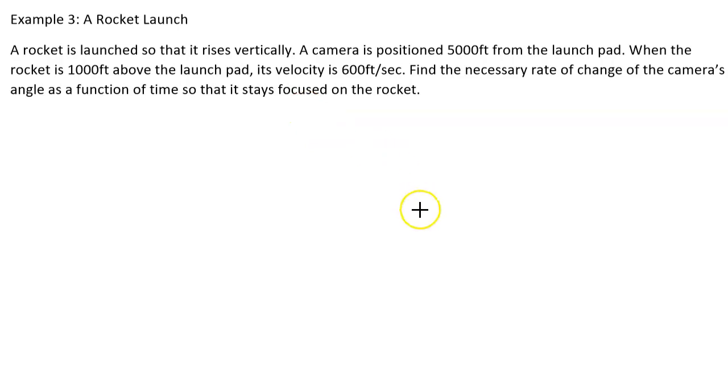We always want to begin our problem with trying to visualize it. So we've got a camera and its horizontal distance from the launch pad is 5,000 feet and this is not going to change because it doesn't indicate to us that the camera is moving.